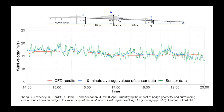The initial results are really promising. What you're seeing on screen is for sensor C: the red curve is from our CFD model at that location, the blue is the 10-minute average of the sensor data, and the green is the raw sensor data. We are certainly in the right ballpark, and it's very encouraging to see that our simulations are quite accurately representing what's happening in reality.